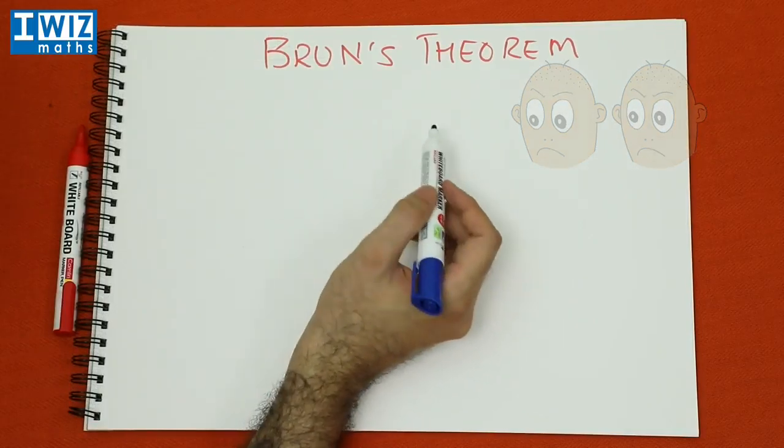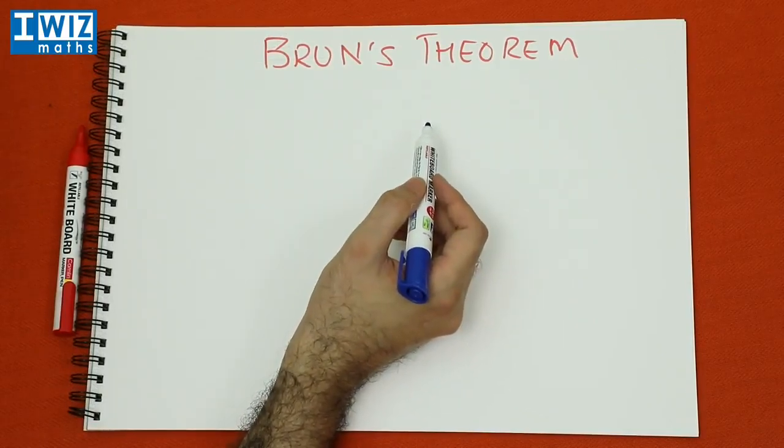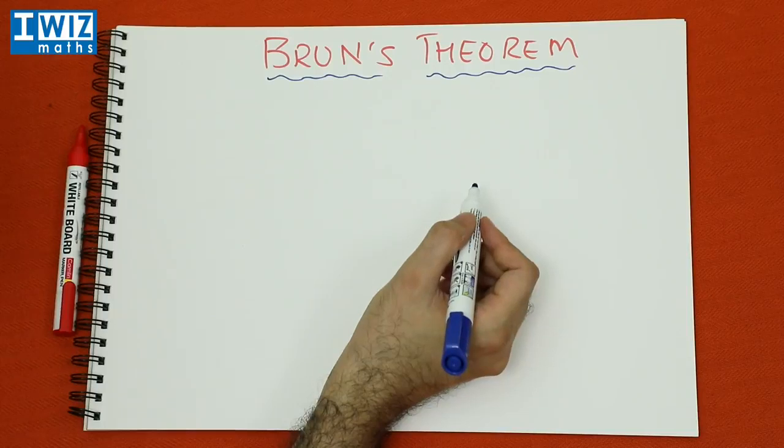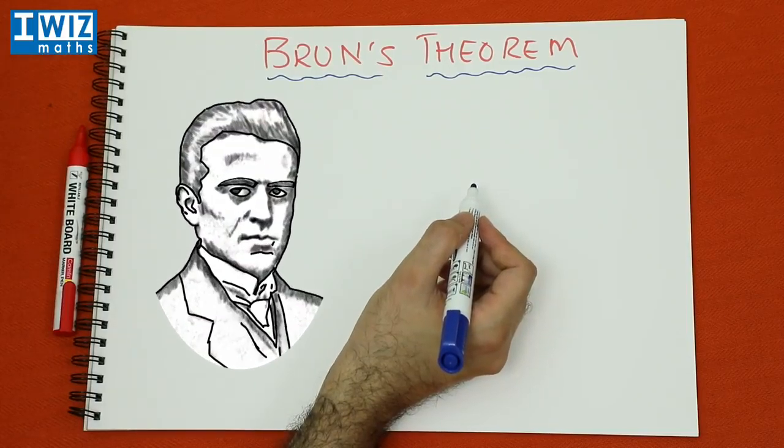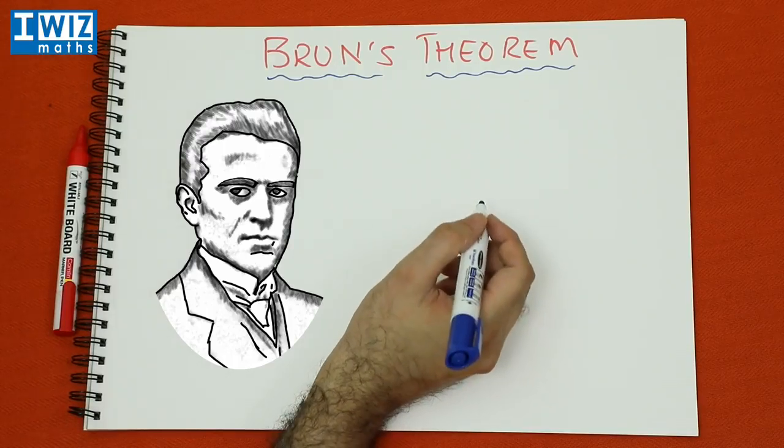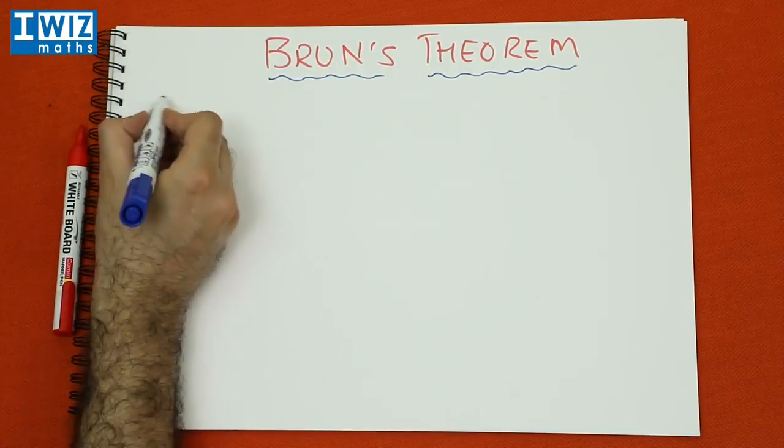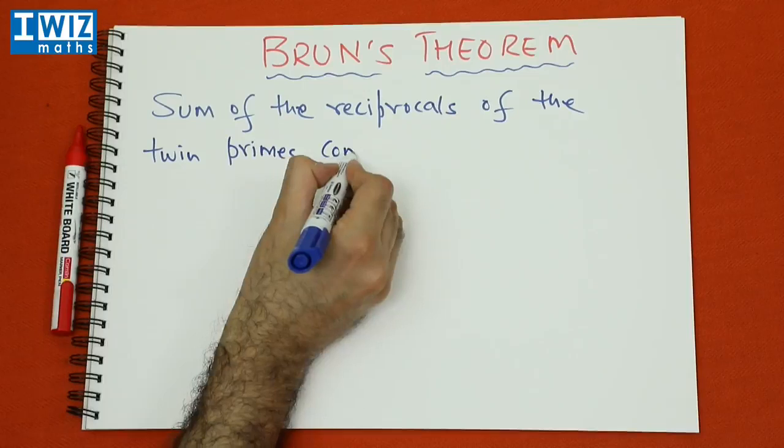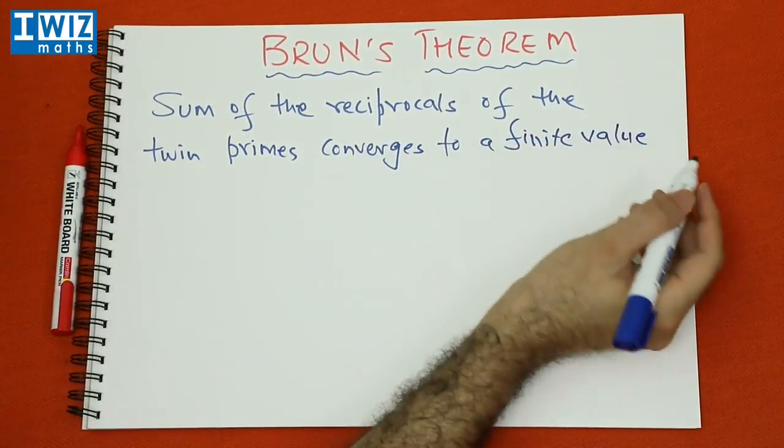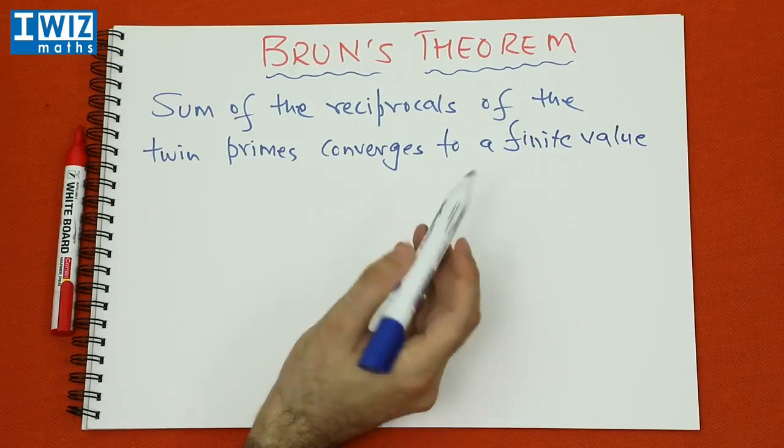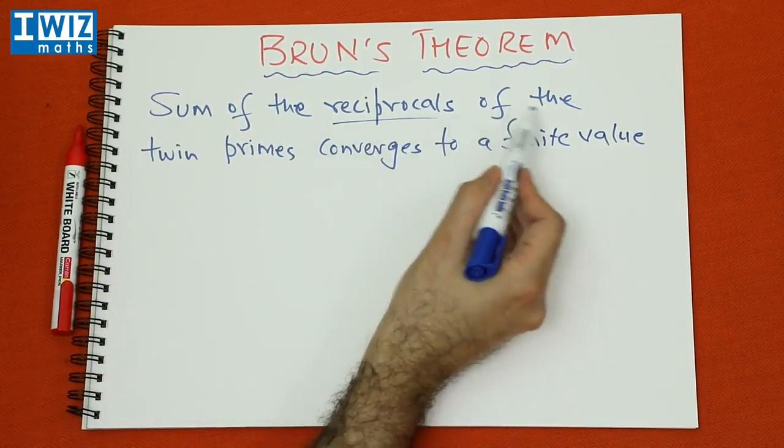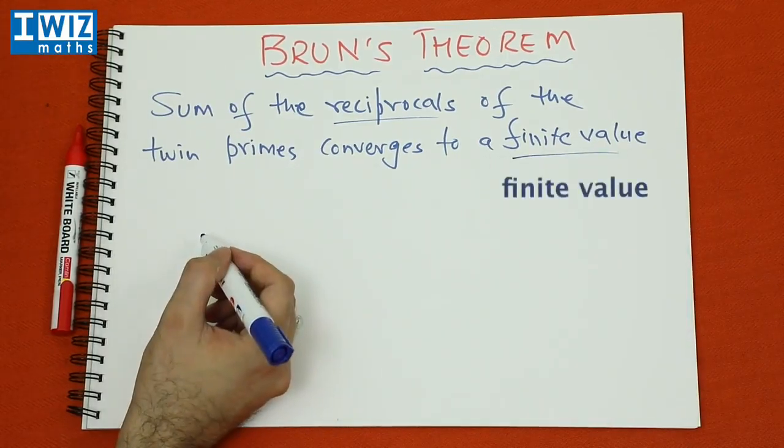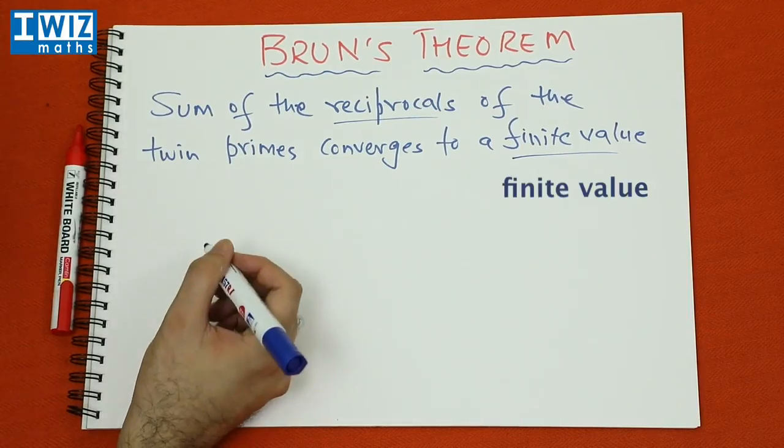Let's outline a rather interesting property of twin primes known as Brun's theorem. And this property of the twin primes was proved by a gentleman known as Vigo Brun more than a hundred years ago. And the statement of the theorem is as follows. The sum of the reciprocals of the twin primes converges to a finite value. That's the key ingredient of the theorem.